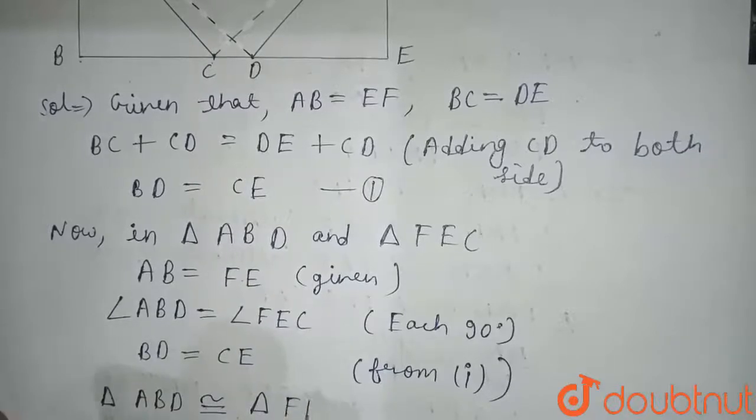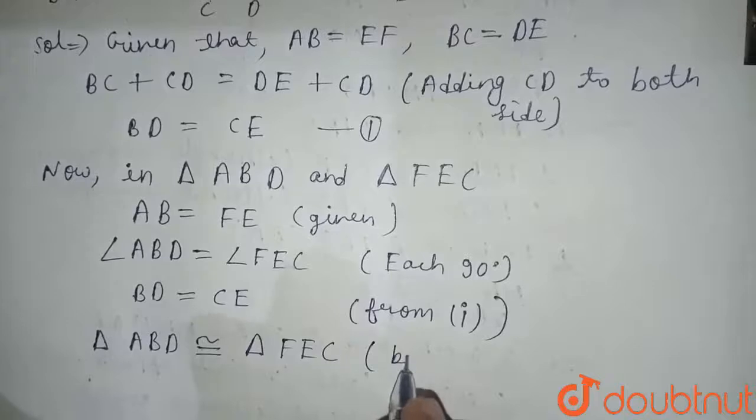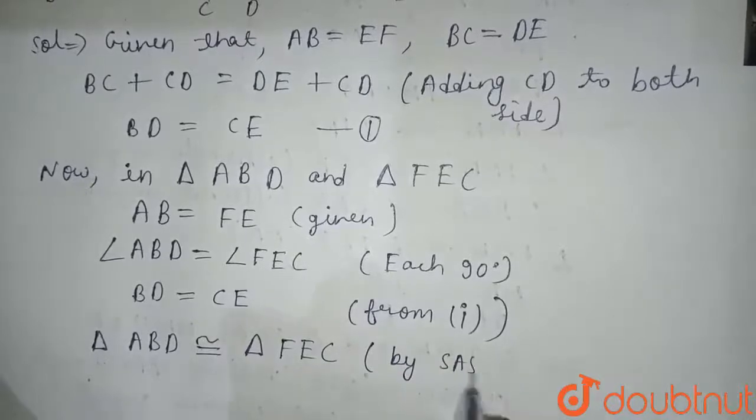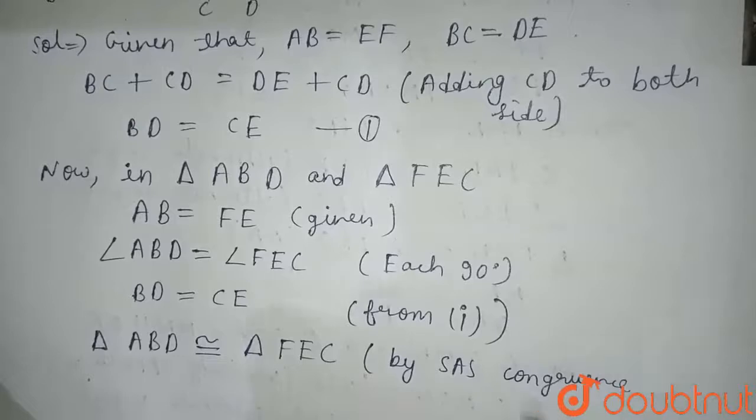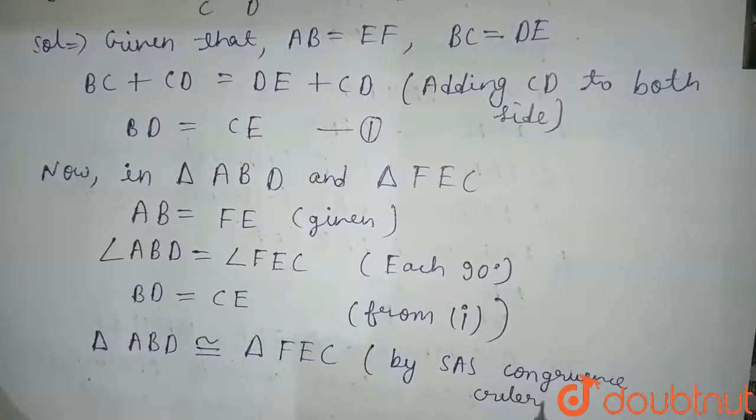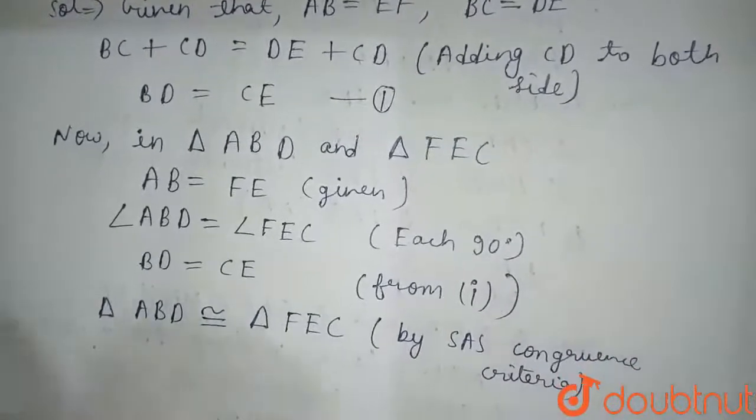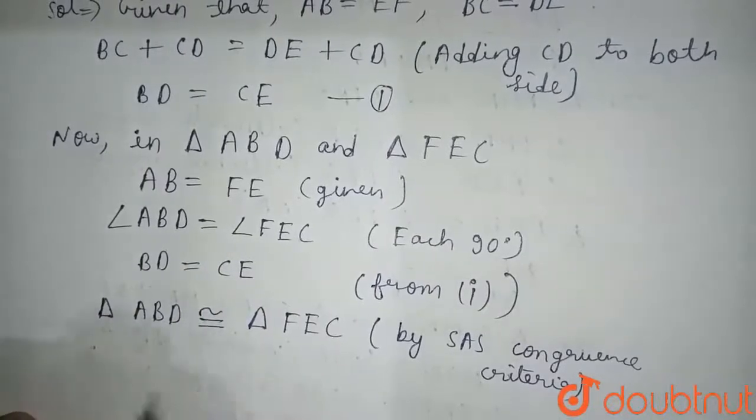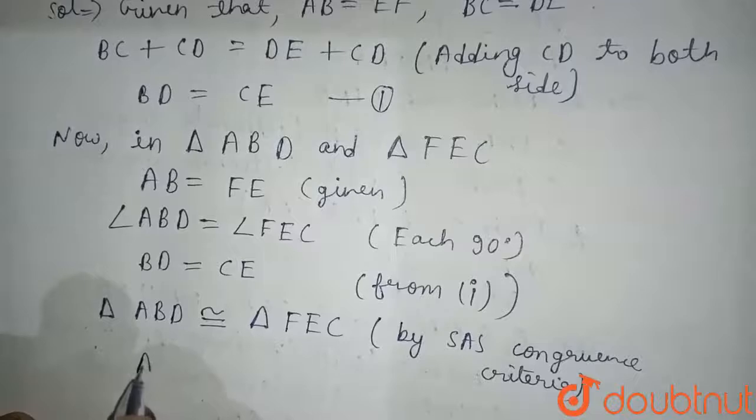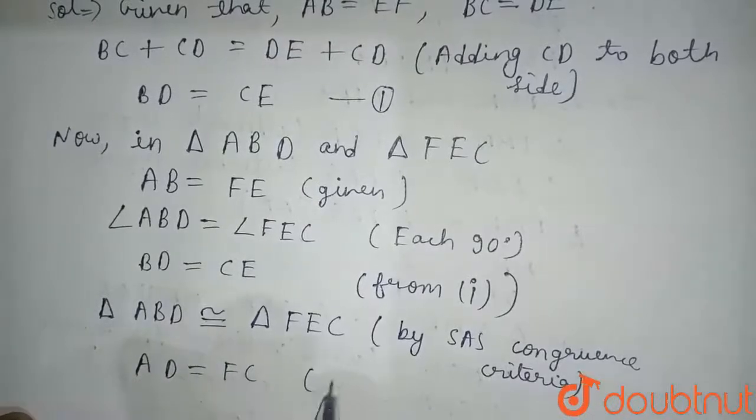So three conditions are equal, so we can say that triangle ABD is congruent to triangle FEC by Side-Angle-Side congruence criteria. That is side, angle, side.